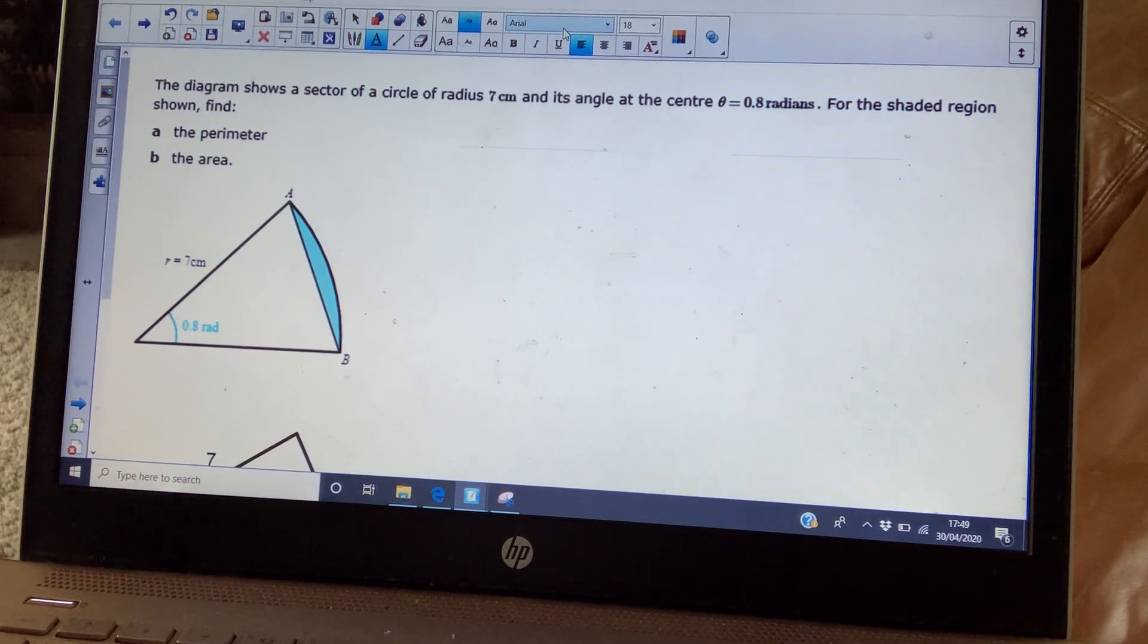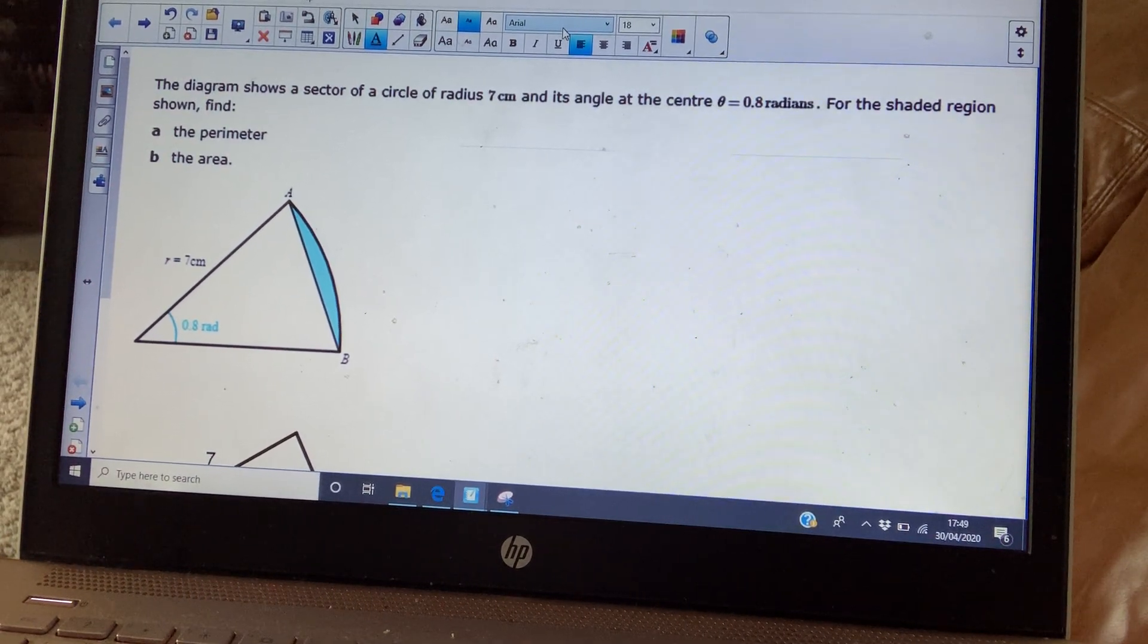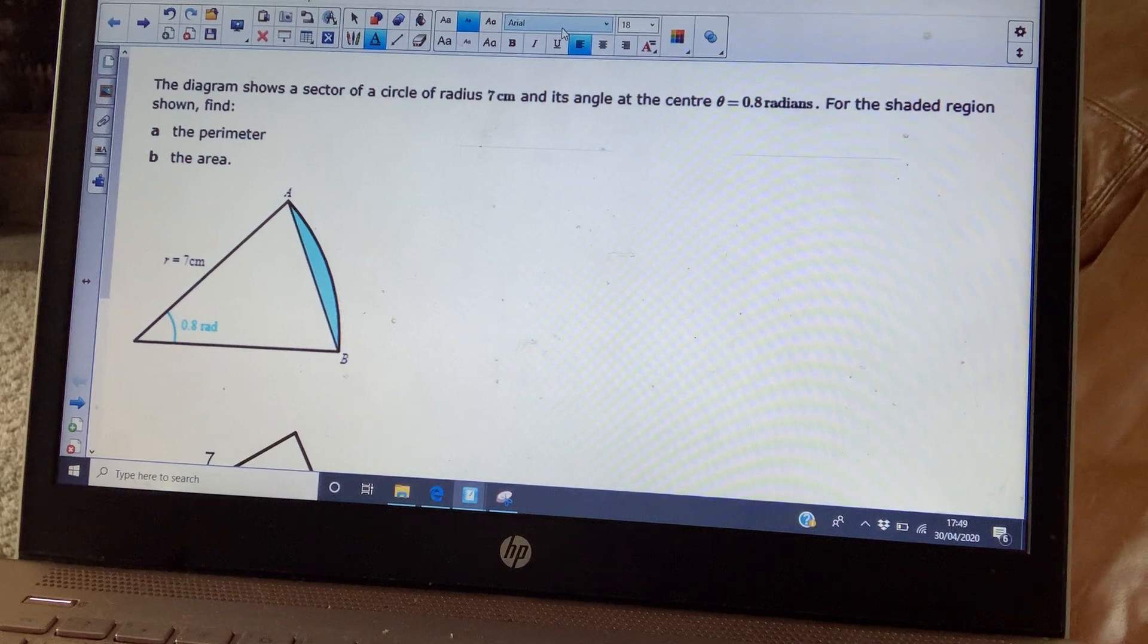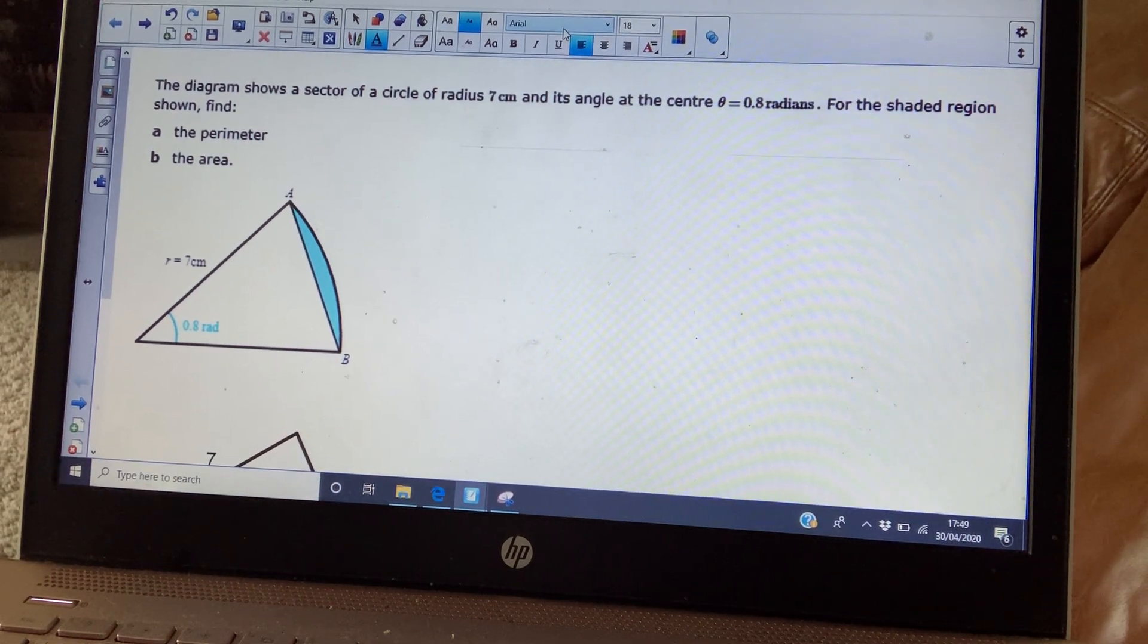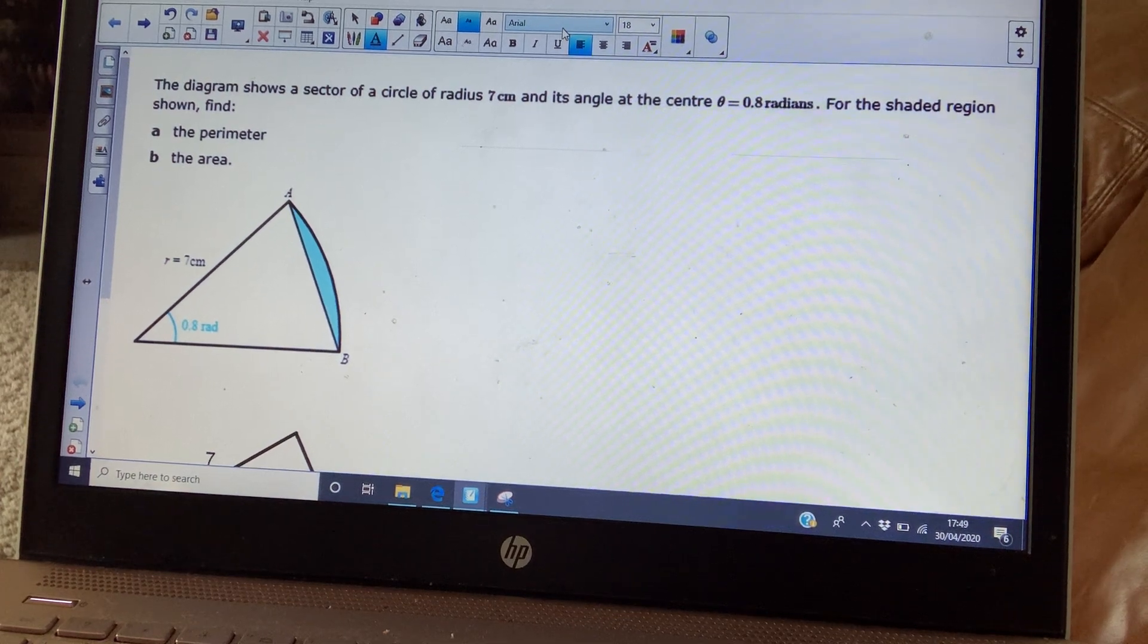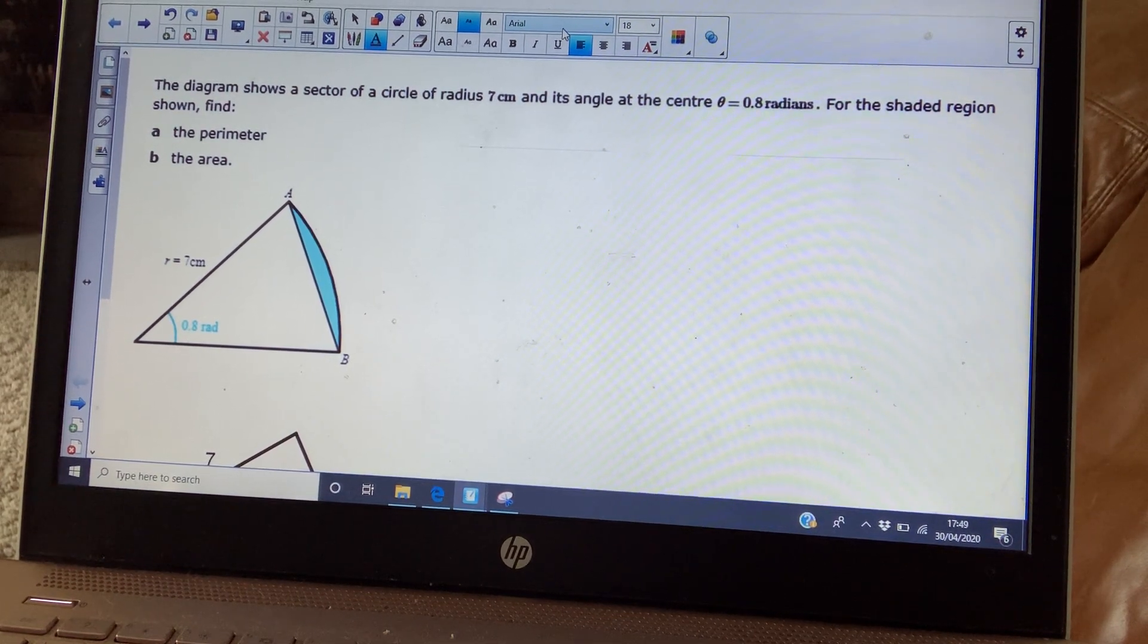So what we're going to look at today is finding the perimeter of a segment and the area of a segment. We're going to use the ideas that we talked about yesterday.